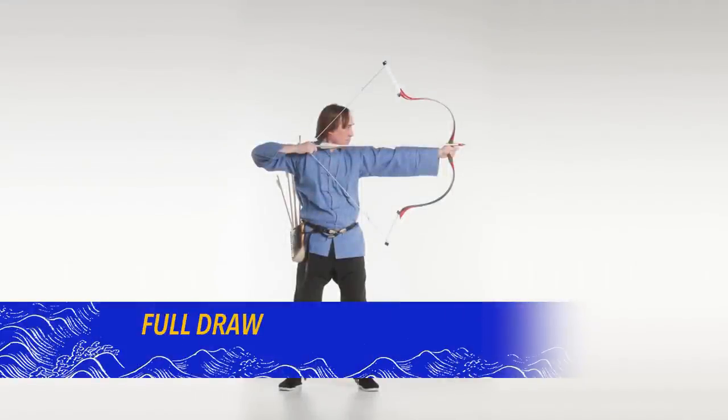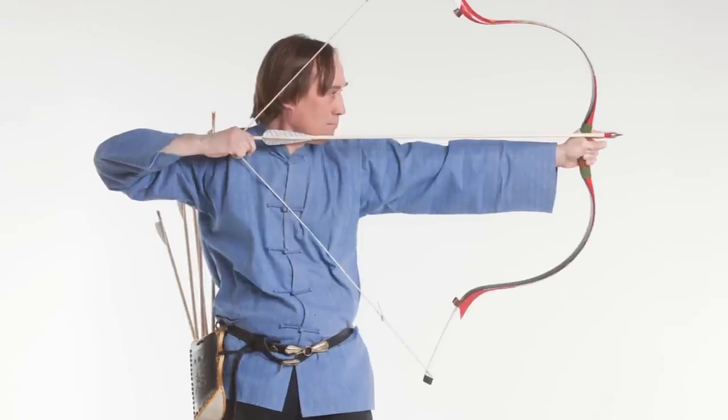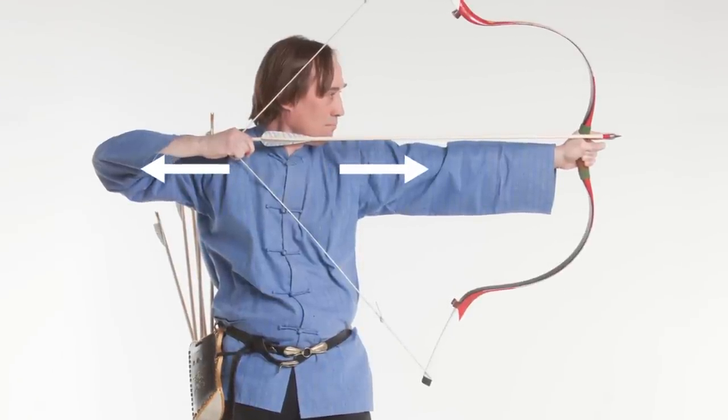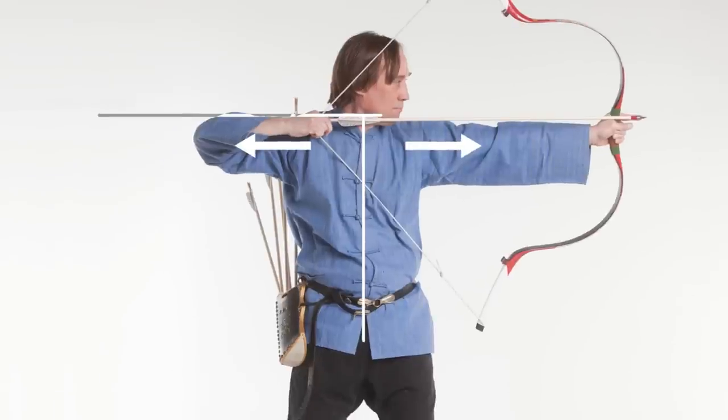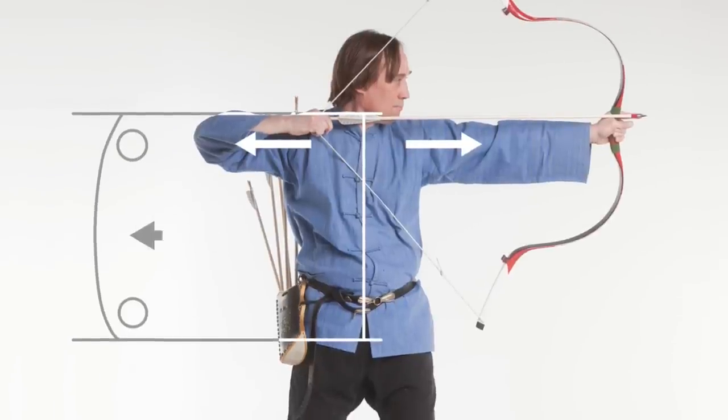Many classic Manchu archery texts explain that in order to reach full draw, the archer should open the chest and shoulders so the scapula move towards one another. As the chest opens, the spine bows outward, rounding the torso.